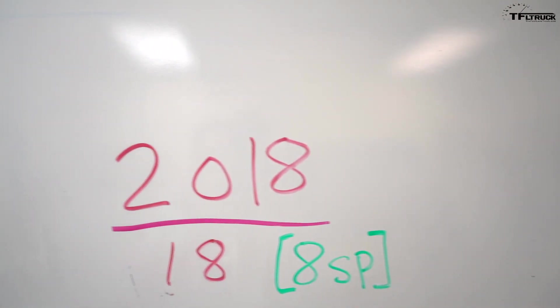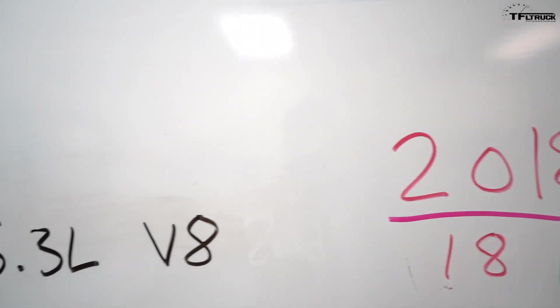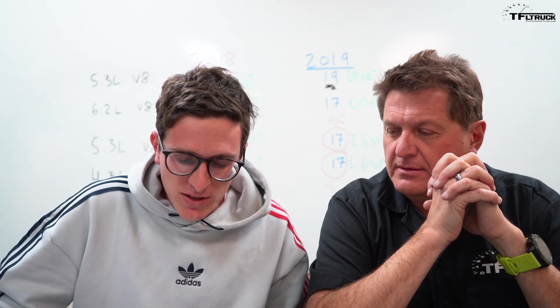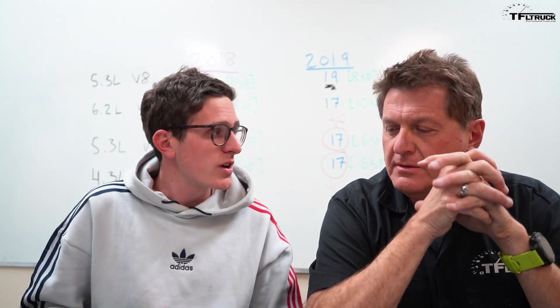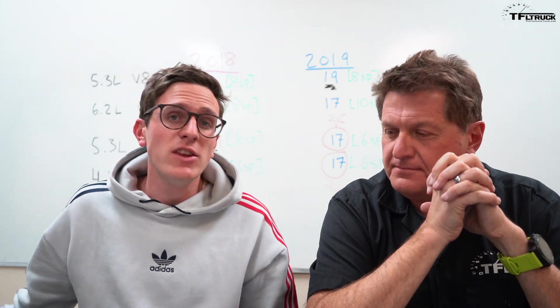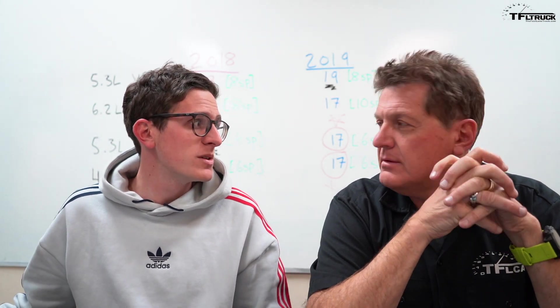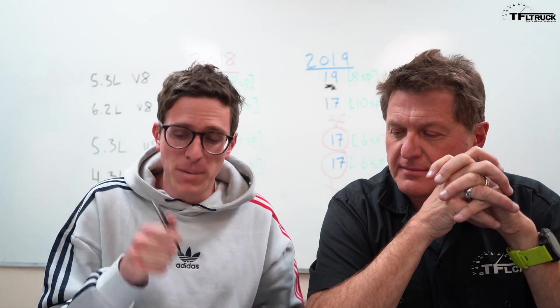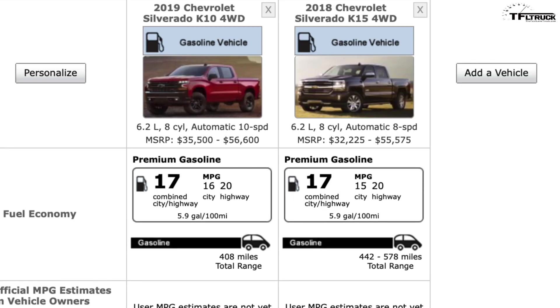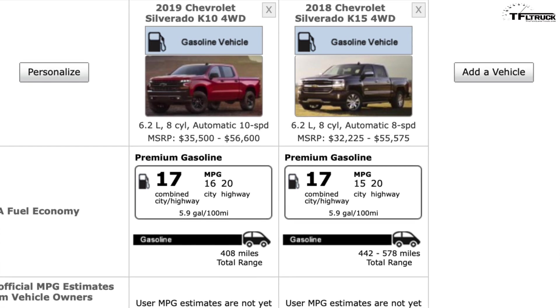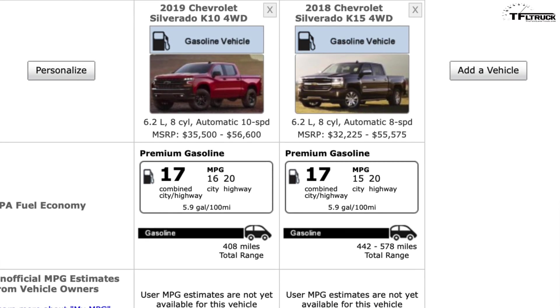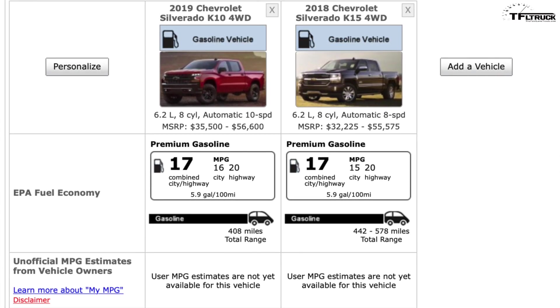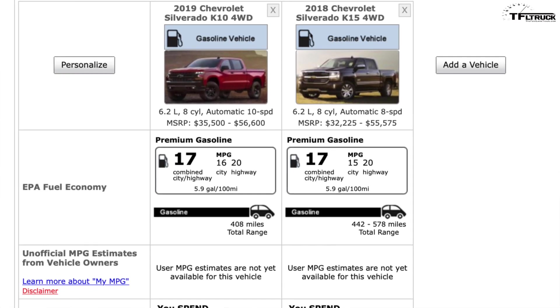Let's talk about the big engine, the 6.2. This is where it gets a little bit confusing. With the 6.2 liter V8 in the old truck you got an 8-speed automatic transmission. In the new truck you get a 10-speed automatic transmission. So in the new truck you get two more gears and you get dynamic fuel management. But the combined MPG is the same when you're comparing like configurations—17 combined for both trucks.